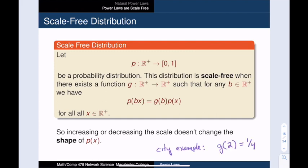Going back to our city example, we would know that this dilation function g satisfies g(2) = 1/4. That is, if we double the size of the city, then the probability goes down by a factor of 4.